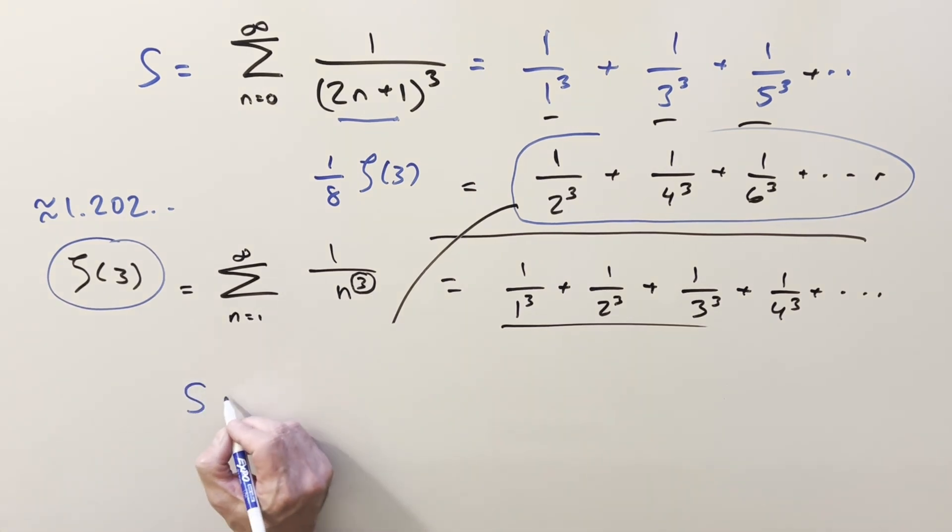Our equation is: S plus the even terms, which is (1/8)ζ(3), equals the full ζ(3).